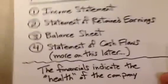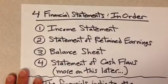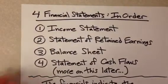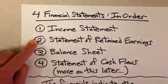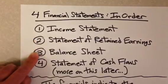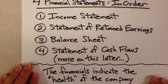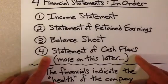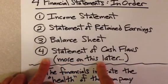So finally, to sum all of this up, there are four financial statements, shown here in order. First, the income statement. Then the statement of retained earnings. The balance sheet. And finally, there is something we haven't talked about yet — the statement of cash flows. We'll be discussing this more later in our course.